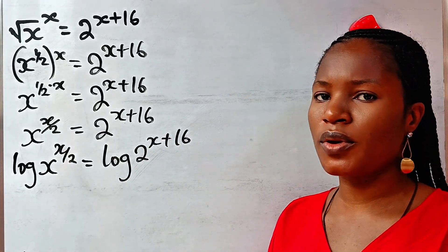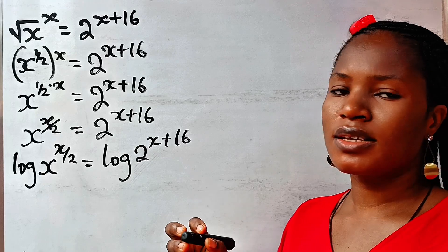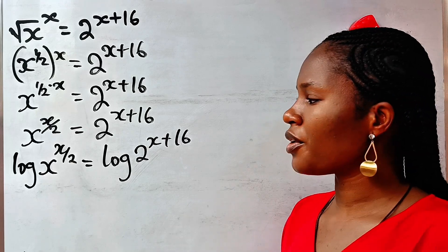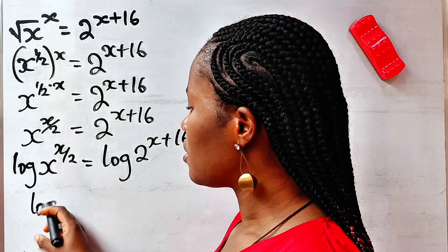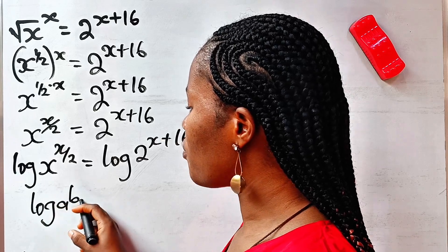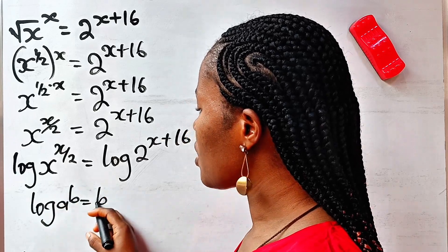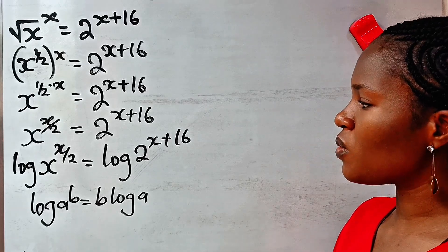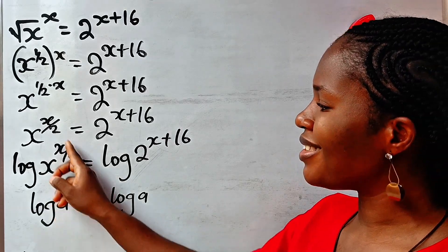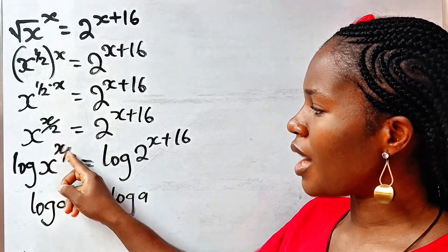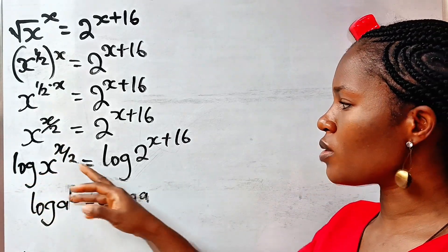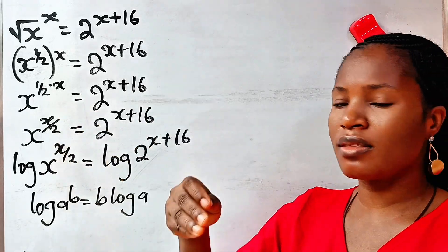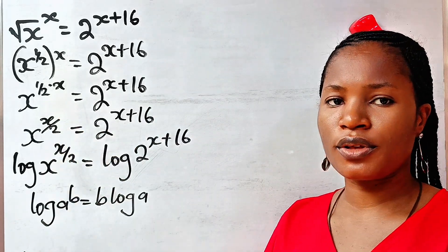This is because there is a law in logarithm that states that log of a to the power of b is equal to b multiplied by log a. That's where we can bring down this power — our variable — and solve it. Once it is the power, we cannot solve it, and the only thing that can bring it down is the law of logarithm.